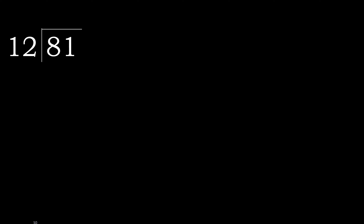81 divided by 12. 8 is less than 12, therefore move to next. 81 is not less, therefore with 81. 12 multiply by which number is nearest to 81 but not greater?